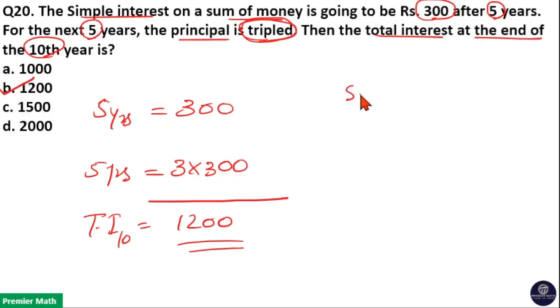Here, simple interest is equal to principal into rate into number of years. In the first case, principal is P. In the second case, principal is tripled. So, simple interest becomes 3 into the initial amount.